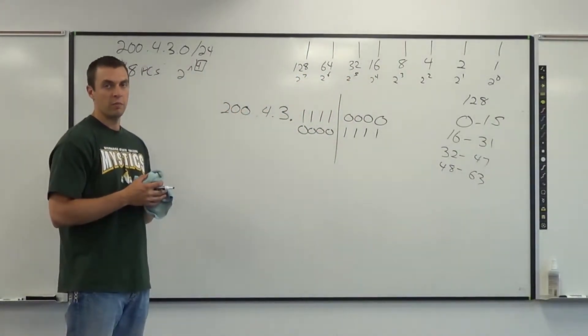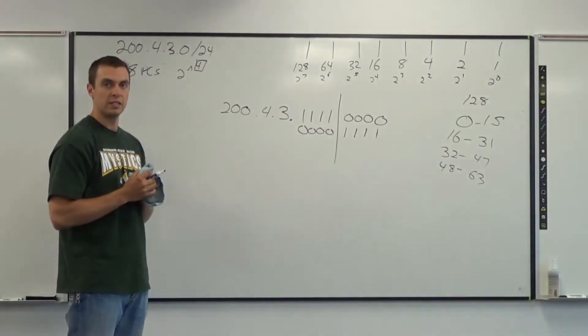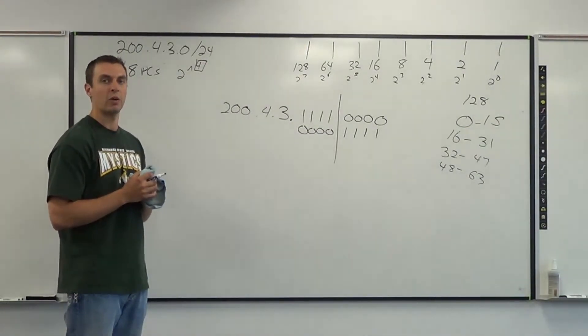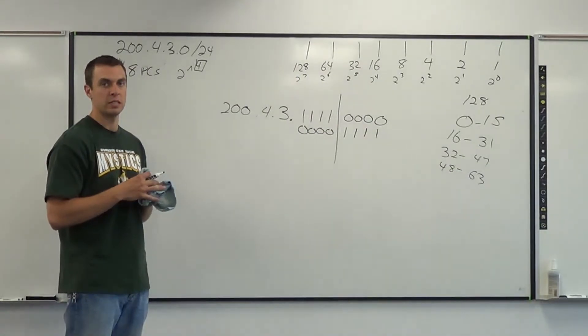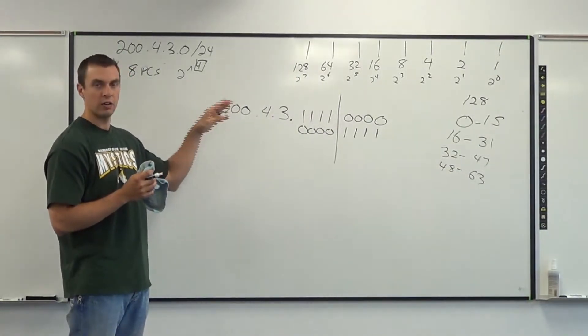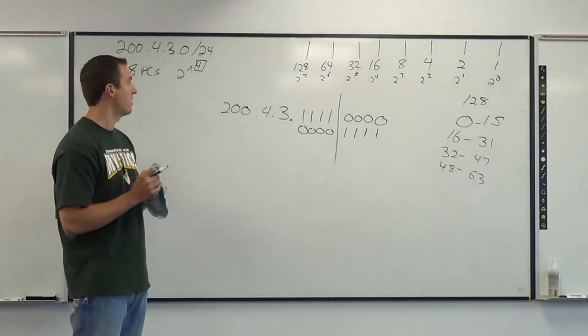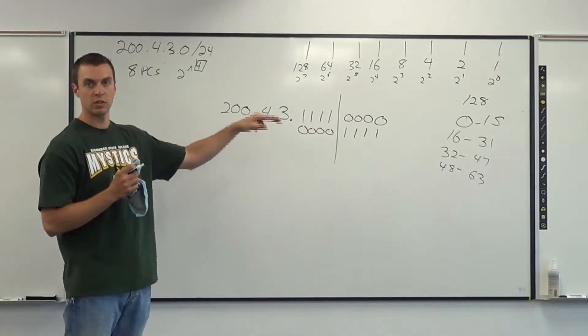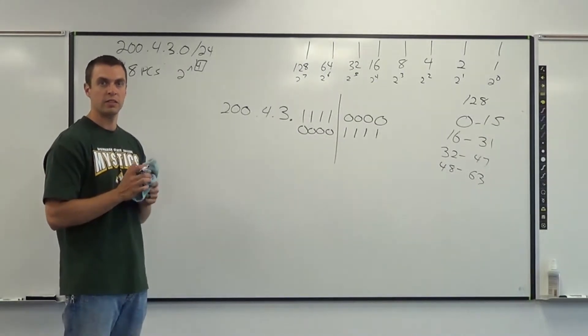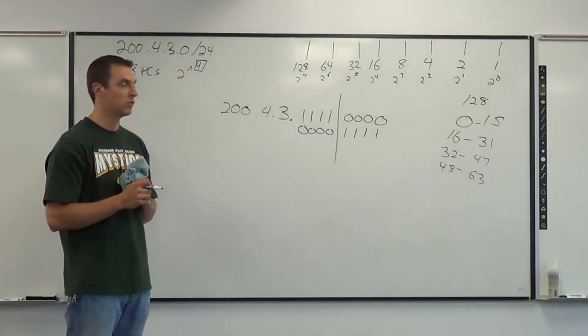So remember, our method is essentially the same. Figure out how many PCs that you need, figure out the power number for that number of PCs. Remember, we can't be right on or even one less, because we have to bump up to the next power number. And that power number is going to tell me how many zeros, right-hand side of the line. The rest of the method is essentially the same as before.